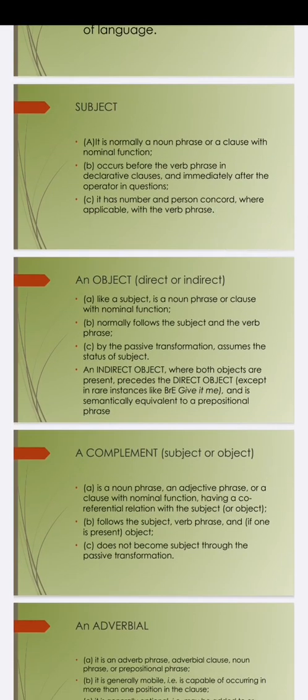The third element is the object — either direct or indirect. How do we distinguish between direct and indirect? The object is like the subject — a noun phrase or clause with nominal function. The indirect object is the beneficiary, while the direct object is the gift itself. For example: 'I bought the girl a gift' — 'the girl' is the indirect object who benefited, and 'a gift' is the direct object.